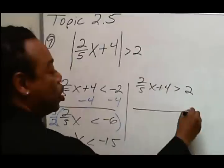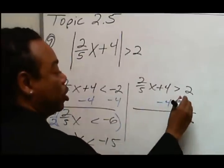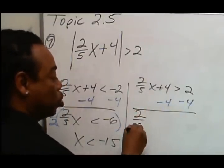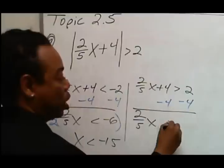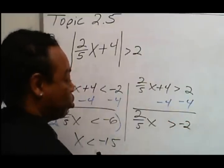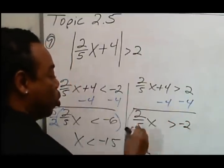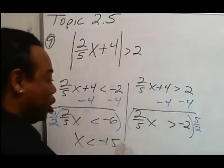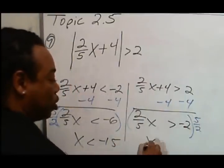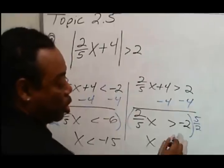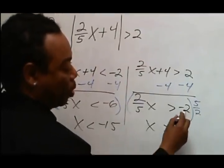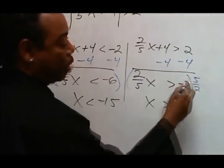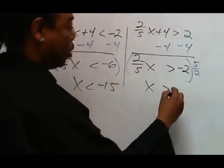On this side, we're going to subtract 4 from both sides. And we'll get 2/5x is greater than negative 2. Then we'll multiply by the reciprocal of 5/2. This will give us x, and this is greater than 2 divided by 2 is 1 times negative 5, which is negative 5.